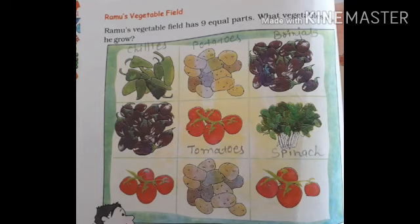Here you can see Ramu's vegetable field. Ramu's vegetable field has 9 equal parts. What vegetables does he grow?